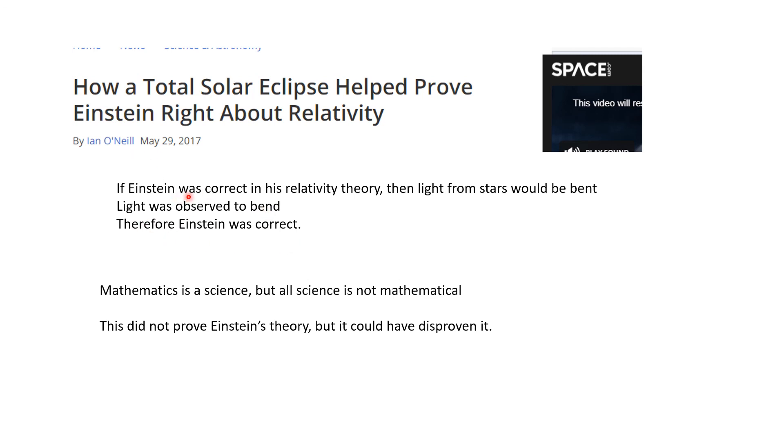Well you see, this is if P then Q, Q, therefore P. So you see this is not mathematically correct. Now this did not prove mathematically Einstein's theory, but it does empirically support it, and it certainly could have disproven it. So my note here is that mathematics is a science, but not all science is logically mathematical.